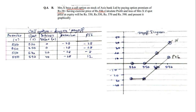We give the heading as 'Call Option Buyer's Payoff.' Our first column is exercise price — 550 in all cases. Spot prices are 530, 550, 570, and 590. Now to find intrinsic value for a call option buyer: the rule is that up to the point where spot and exercise price are equal, the value remains zero. After that there will be a positive increase.